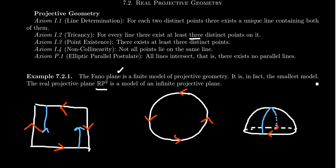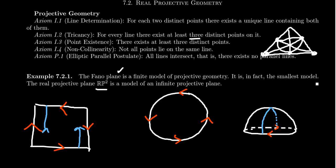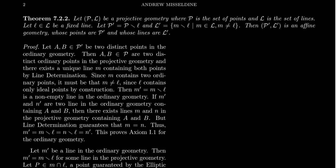These three are all isomorphic copies of the real projective plane. We also have the Phano plane as a finite model — our Harry Potter model with seven points and seven lines. Now here's the mega theorem for this lecture. It's a really interesting and elegant result about projective geometries. We start with a projective geometry where the set of points is called P and the set of lines is called L.